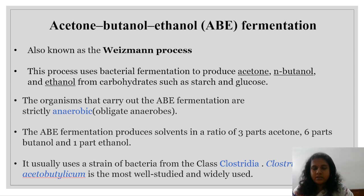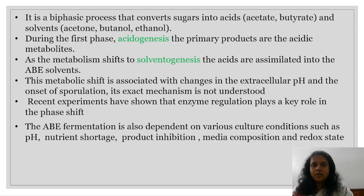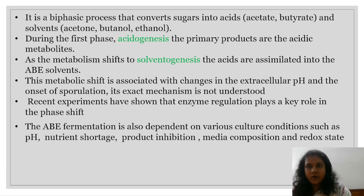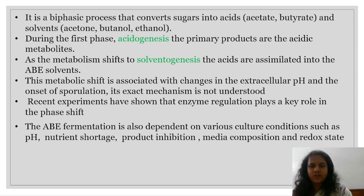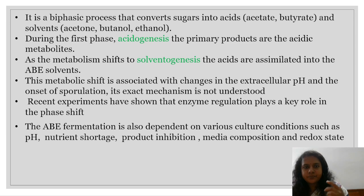It usually uses strains of bacteria from the class Clostridium and Acetobacterium. It is the most well studied and widely used. It is a biphasic process that converts sugar into acids like acetate and butyrate, and solvents like acetone, butanol, and ethanol. During the first phase, acetogenesis is the primary producer of acidic metabolites. As the metabolism shifts to solventogenesis, the acids are assimilated into ABE solvents. This metabolic shift is associated with changes in extracellular pH and onset of sporulation. Its exact metabolism is not fully understood.